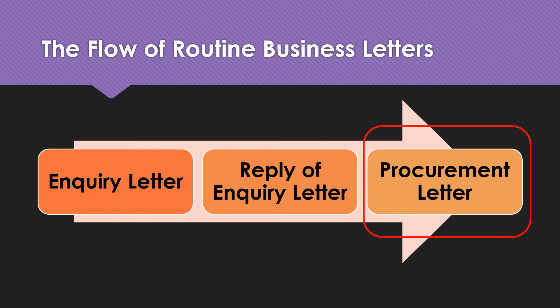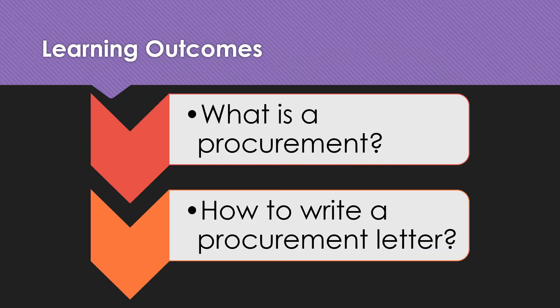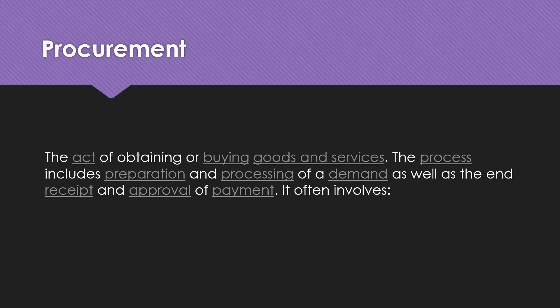Once everything has been decided and finalized, the next step — which is the final stage of a routine business letter — is for you to write a procurement letter. This procurement letter serves the purpose of telling or informing the producer of the goods, the company, of the things that you have finalized and decided to purchase.